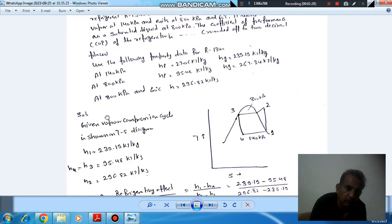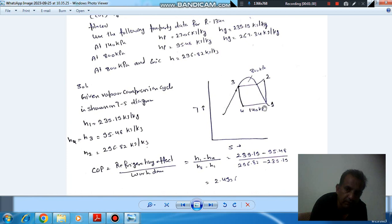So here, this is your vapor compression cycle. State 1 is your compressor inlet and state 2 is compressor exit, or you can say it is the condenser inlet.